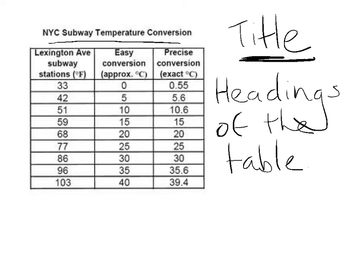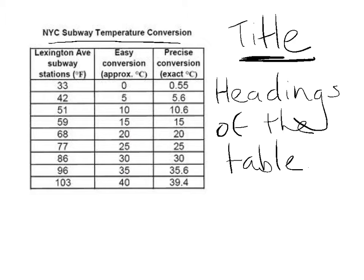My second step is to look for the headings of the table. On here it has Lexington Ave Subway Stations, degrees Fahrenheit, and Easy Conversion — approximate degrees Celsius — and Precise Conversion — exact Celsius. So what that tells me is these are the degrees at Lexington Station in Fahrenheit, converted into approximately rounded Celsius, and this is the exact temperature in Celsius.